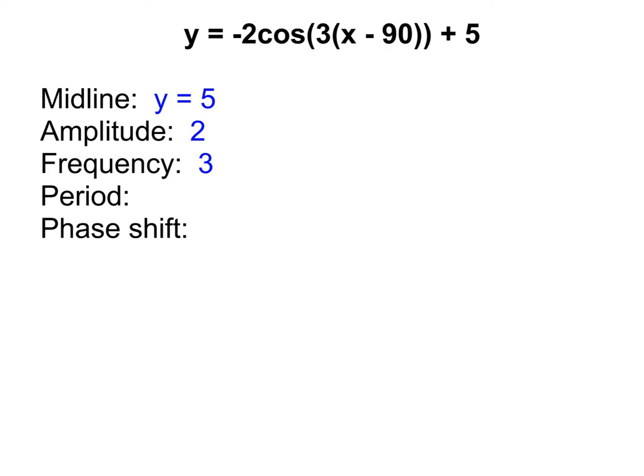Now, we need to find period. So, the period, remember, I always do 360 divided by frequency. So, it's going to be 360 divided by 3, which gives me 120 degrees. And then, finally, the phase shift. That comes from this minus 90 here. So, the phase shift is 90. Minus tells me to go right. So, the phase shift here is right 90.